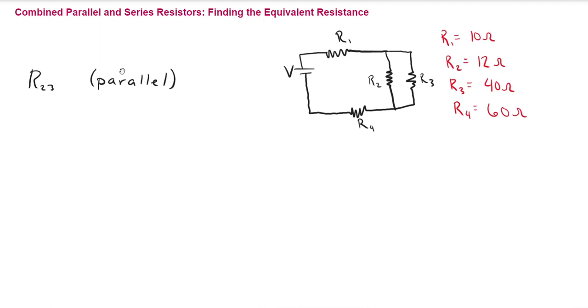We're just looking to get the combined resistance of these two resistors first. So it's going to be 1 over R23 equals 1 over R2 plus 1 over R3. We want to take the inverse of both sides to get R23. Plugging in the values, we get 1 over 12 ohms plus 1 over 40 ohms. Then we take the inverse, and so this is going to give us 9.2 ohms.